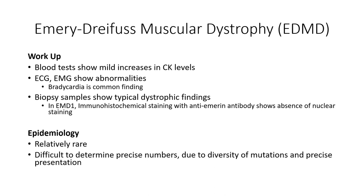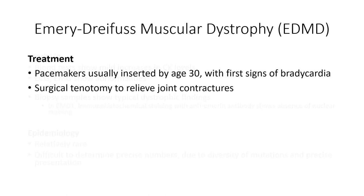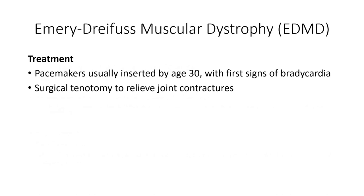It's difficult to accurately assess the frequency of EDMD in the general population. To date, only 50% of the identified cases have been linked to a known gene product, and so many cases may go undiagnosed. The best estimate is about one to two individuals per 100,000. Early interventions are similar to those for other muscular dystrophies, with the focus on maintaining range of motion and limiting joint deformities. Surgical tenotomy can be used to reduce the effects of contracture, and pacemaker units are typically implanted by the age of 30 to treat cardiac arrhythmias.